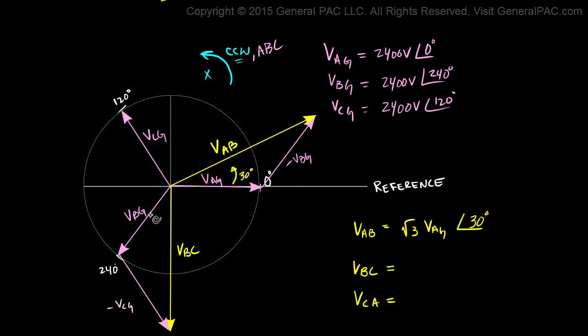So what we're saying is that if we take VBG, we rotate it by 30 degrees in the counter-clockwise direction. So we take VBG, rotate it 30 degrees in the counter-clockwise direction, and then if we multiply it by the square root of 3, that's going to equal VBC.